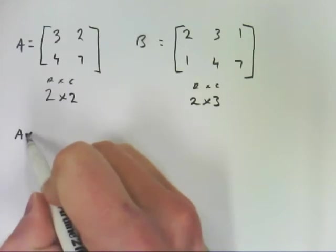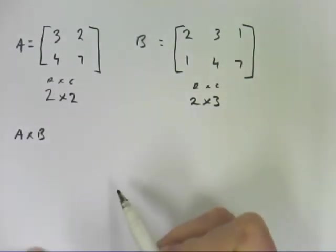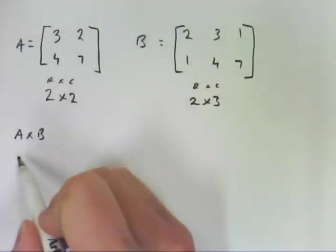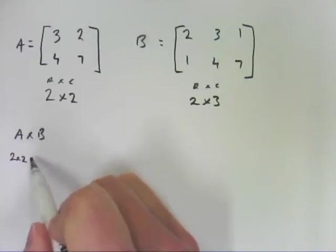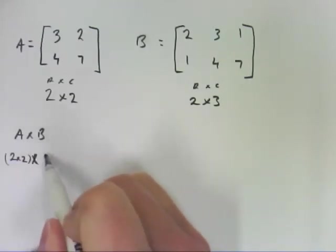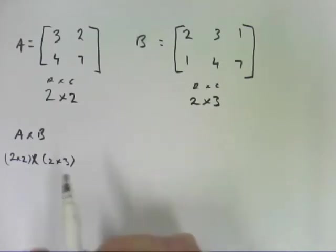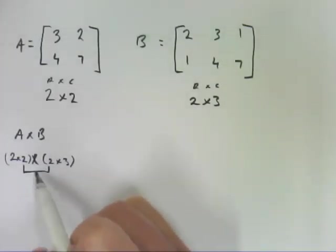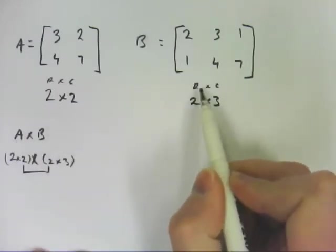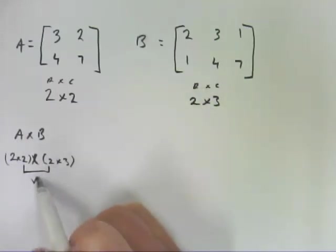So if I wanted to do A times B, to check whether I could do it, I go 2 by 2, and I put that in brackets, by 2 by 3. And these two numbers are the same, so the number of columns in matrix A is the same as the number of rows in matrix B, so I can do it.